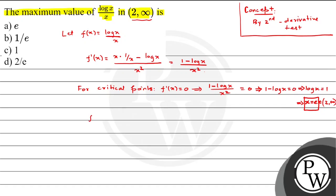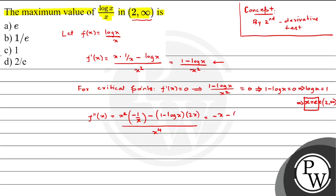Now I will find the second derivative f''(x). We have f'(x) = (1 - log x) / x². Differentiating using the quotient rule: x squared as it is, differentiation of 1 is 0 and differentiation of log x is minus 1/x, minus (1 - log x) as it is, differentiation of x² is 2x, all divided by x to the power 4.